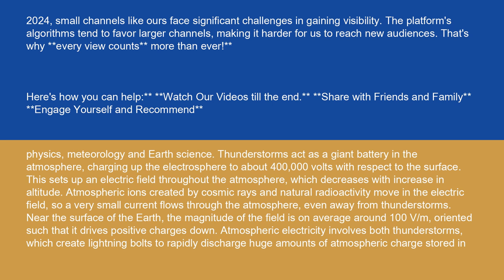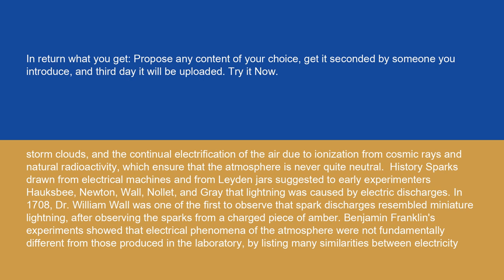Near the surface of the Earth, the magnitude of the field is on average around 100 V/m, oriented such that it drives positive charges down. Atmospheric electricity involves both thunderstorms, which create lightning bolts to rapidly discharge huge amounts of atmospheric charge stored in storm clouds, and the continual electrification of the air due to ionization from cosmic rays and natural radioactivity, which ensure that the atmosphere is never quite neutral.